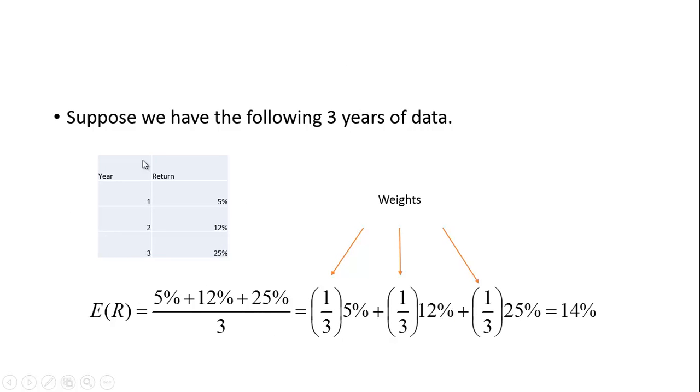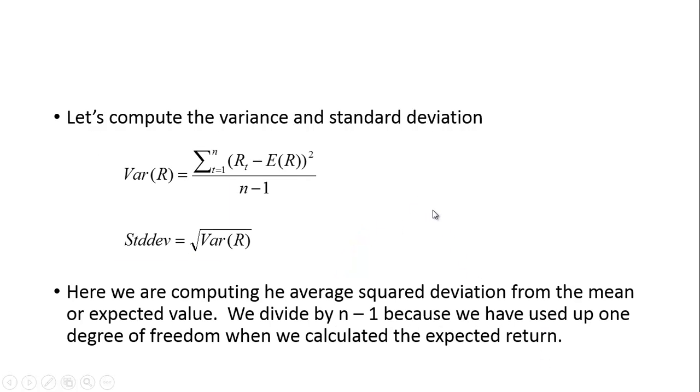Suppose we have these observations: three years of data with returns of 5%, 12%, and 25%. How would we do the calculation? We'd add up 5% plus 12% plus 25% and divide it by three. But what are we actually doing? We're essentially weighting each one of these observations by a third. So if we do that calculation we get 14%.